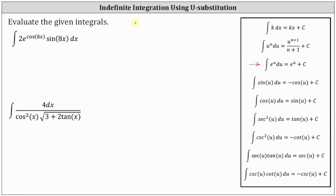So if we let u equal cosine 8x, differential u is equal to the derivative of cosine 8x times dx, which is equal to negative sine 8x times 8, or negative 8 sine 8x dx. Notice to differentiate cosine 8x, we had to apply the chain rule.